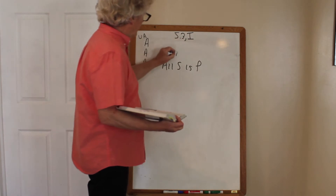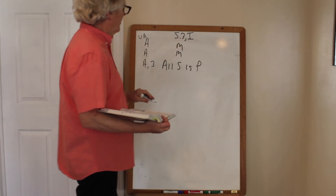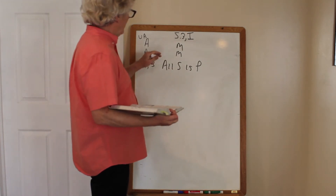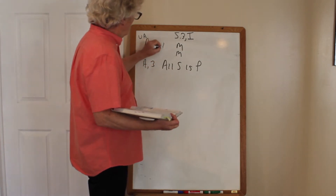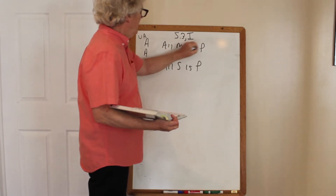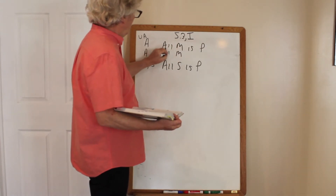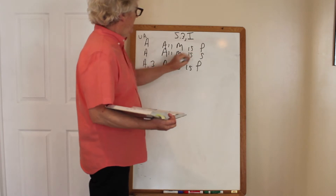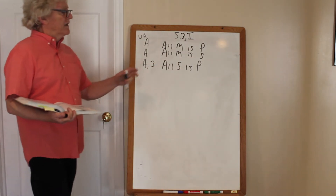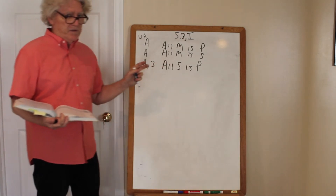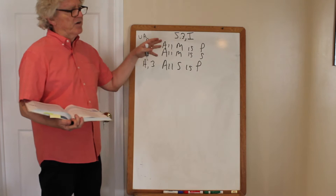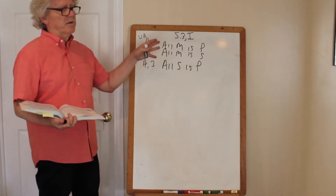So the M term or middle term goes in the subject place, which makes it easier to fill in the rest: all M is P, all M is S, and all S is P. A quick check: you should have two M's, two S's, and two P's. A second check: the middle term is defined as the term that appears in each premise.